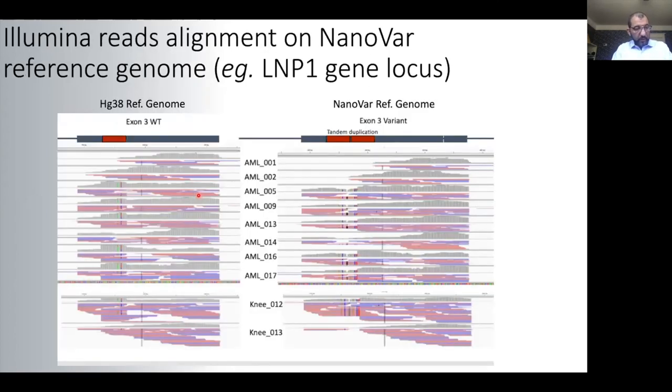Before concluding, I would like to share with you an example of how we can miss some structural variants using only short-read sequencing technology. On the left of this panel, you can see several RNA-seq performed on AML patients aligned to a reference genome. And on the right, you will see exactly the same RNA-seq reads, but aligned on the NanoVAR reference genomes, where we detect tandem duplications within the exon of the gene.